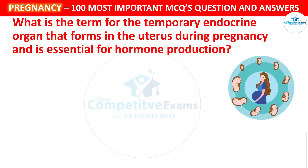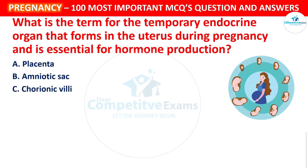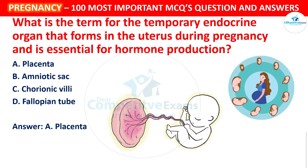Next question: What is the term for the temporary endocrine organ that forms in the uterus during pregnancy and is essential for hormone production? Your options: Placenta, Amniotic sac, Chorionic villi, or Fallopian tube. The correct answer is Placenta. The placenta is a temporary endocrine organ that forms in the uterus and is crucial for hormone production to support the developing fetus.